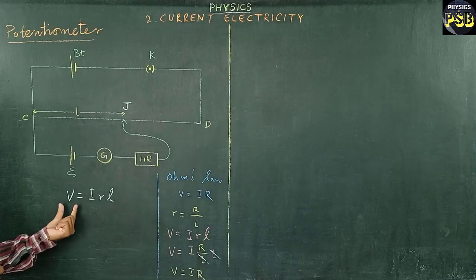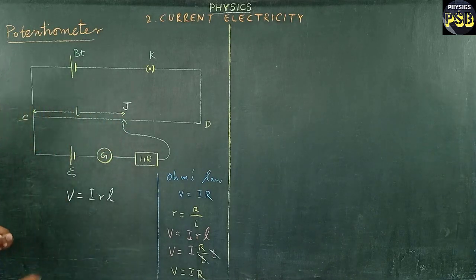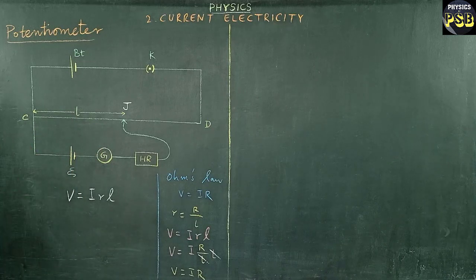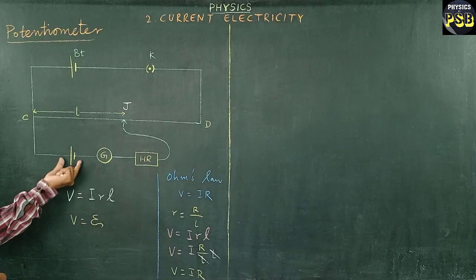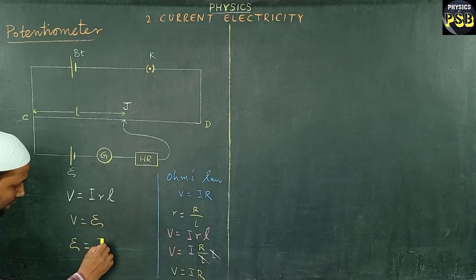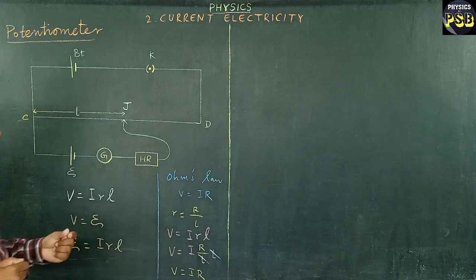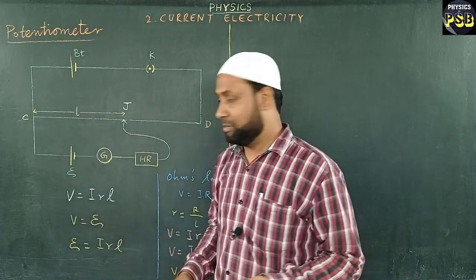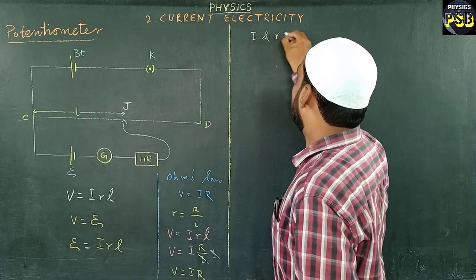This is how we obtain the potential difference across two points using Ohm's law. Now, when the potential difference across CJ is equal to the EMF — that is, if V equals xi (the EMF of the cell) — then the equation becomes xi equals I times r times L. Since the current I flowing through the wire is constant and the resistance per unit length r is also constant, I times r is a constant.